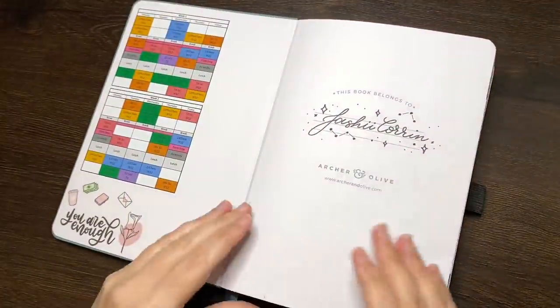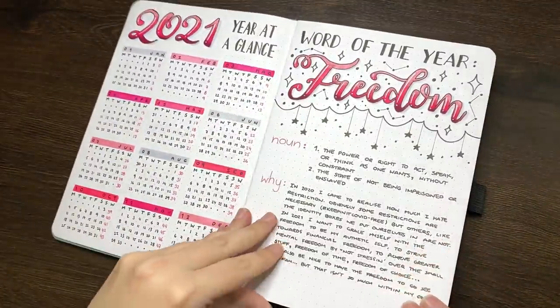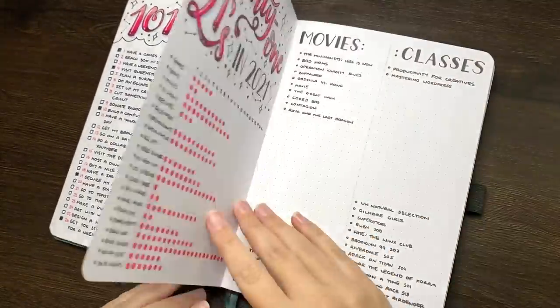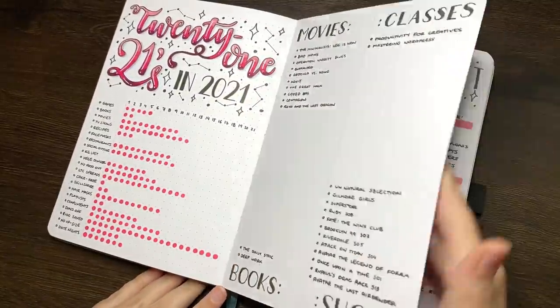Hello again team, it's Jess or Jashikurin and welcome back for another video. As the title suggests, today I am setting up for June in my bullet journal.